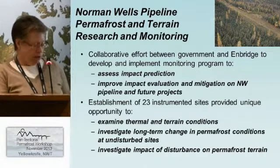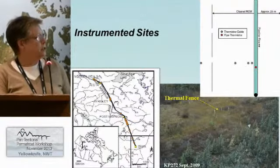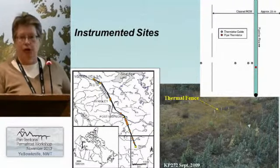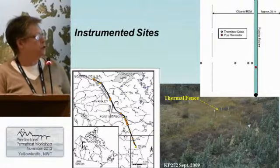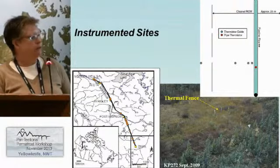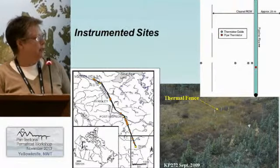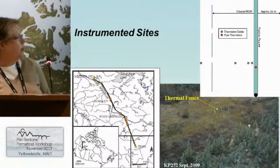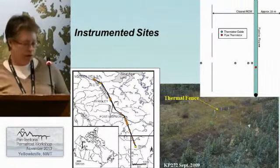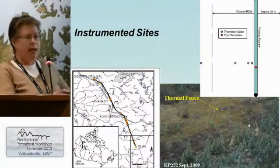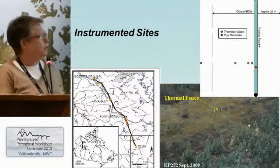These are what the original instrumented sites look like — we called them thermal fences. They consist of thermistor cables installed on the right-of-way at varying distances from the pipe, and also one off the right-of-way in the undisturbed terrain. Here are the locations of all the sites. I'm going to show you some of the types of data we collect and what we can do with it.